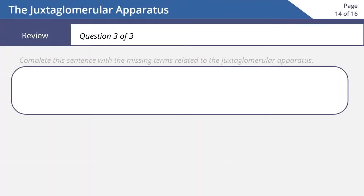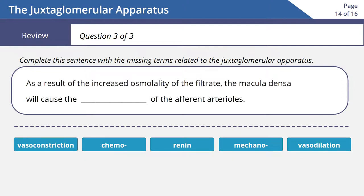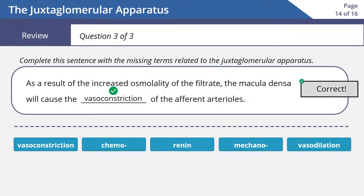Here's one more: as a result of the increased osmolality of the filtrate, the macula densa will cause the blank of the afferent arterioles. Answer: as a result of the increased osmolality of the filtrate, the macula densa will cause the vasoconstriction of the afferent arterioles.